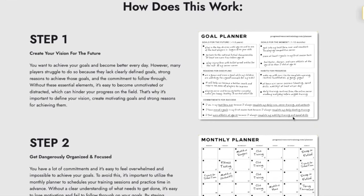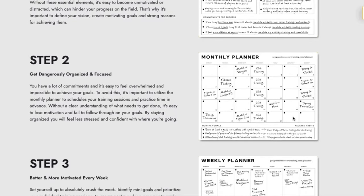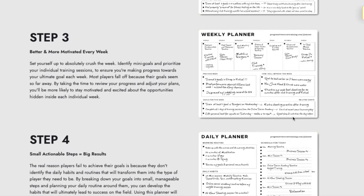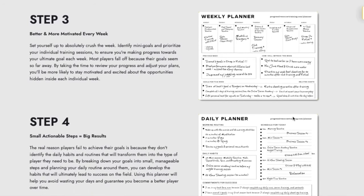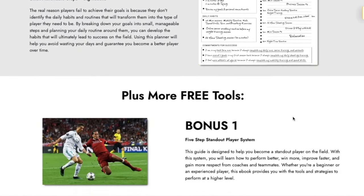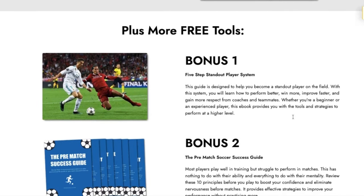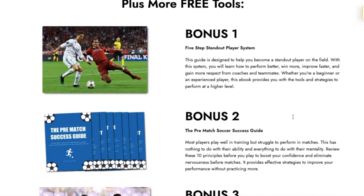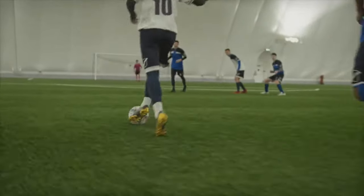First, you'll create a vision for your future in this game. Next, you'll identify the immediate goals you want to achieve and break those goals down into smaller, more manageable steps. Then you'll use the planner to organize your month, get excited about your weeks, and schedule your daily habits and training to ensure that you're actually moving towards your goals.